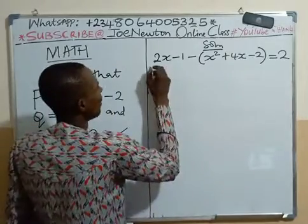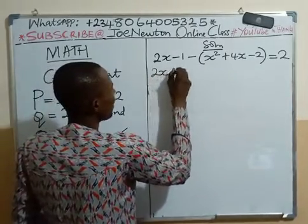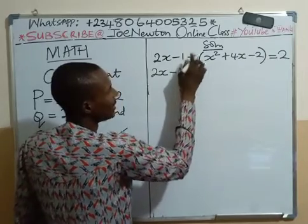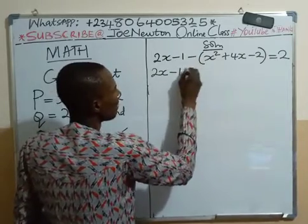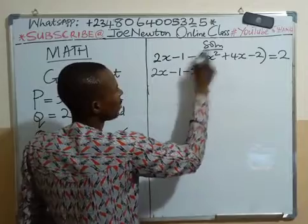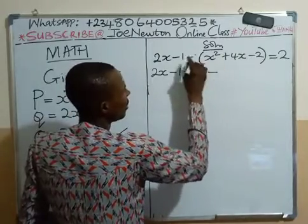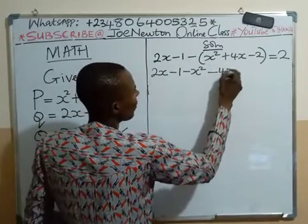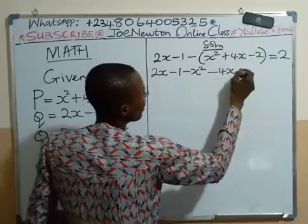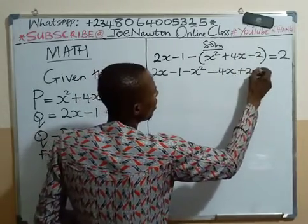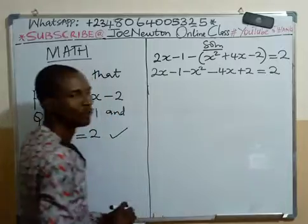Now we simplify this. That will be 2x minus 1 open bracket. Minus times x squared, we have minus x squared. Minus times plus here, we have minus 4x. Minus times minus here, we have plus 2. All is equal to 2 here.